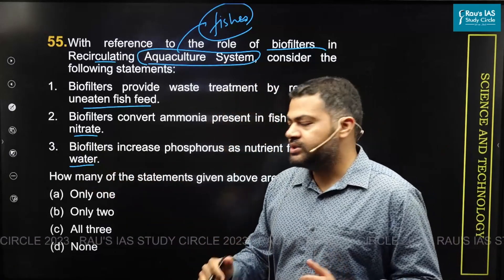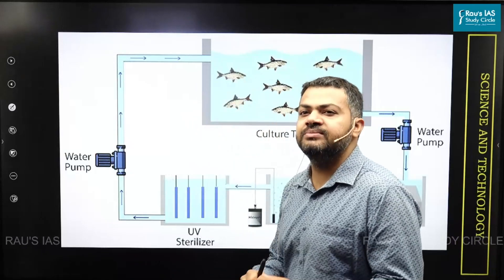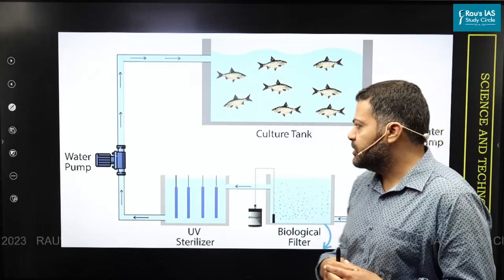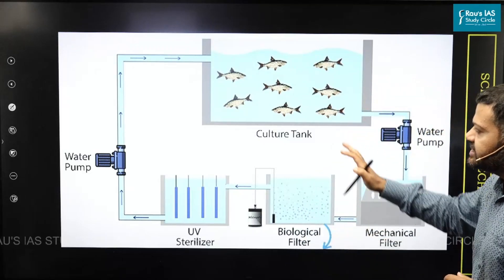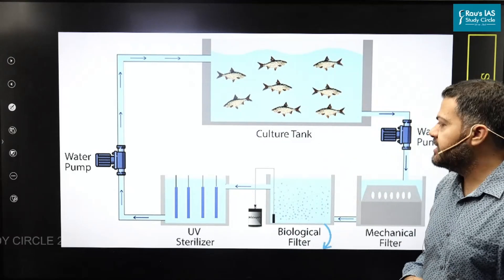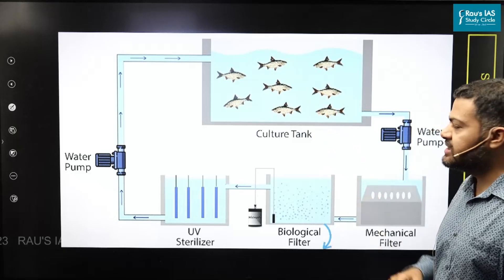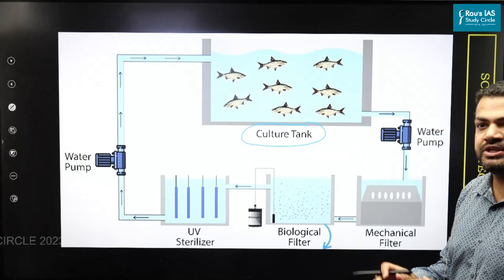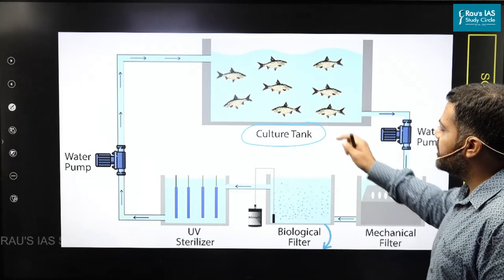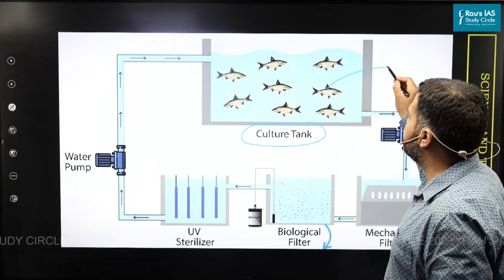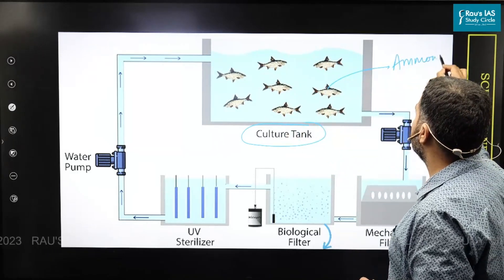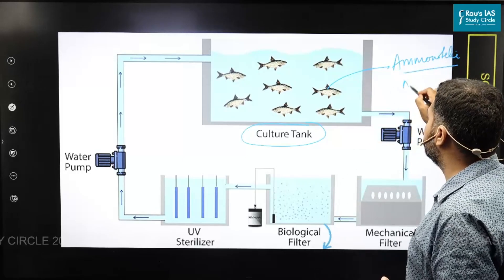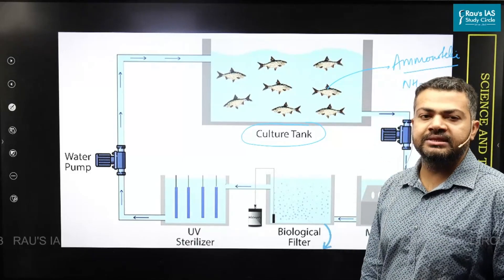Before discussing biofilters, we need to look at the basic mechanism of how recirculating aquaculture works. Aquaculture is basically meant for fish breeding. In this basic aquaculture design, we keep the fishes in a tank known as the culture tank. Whatever waste the fish produces — remember, fish is an example of an ammonotelic organism — means they produce most of their waste in the form of ammonia.